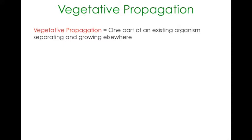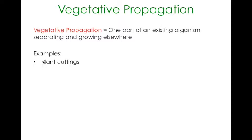Vegetative propagation is basically when one part of an organism separates and it grows elsewhere. The easiest one to know is plant cuttings. If you do a bit of gardening, you'll know that if you cut one part of the plant, put it into the ground, give it the nutrients it requires to survive, it will grow and sprout into a whole new plant. That cutting shown is actually of a marijuana plant, showing the growth of a new plant from the branch of an old one.